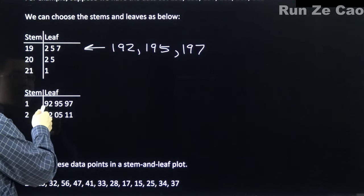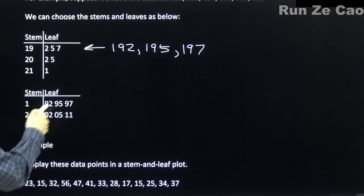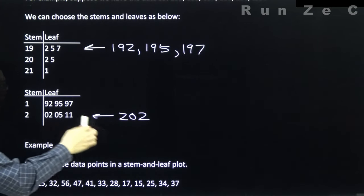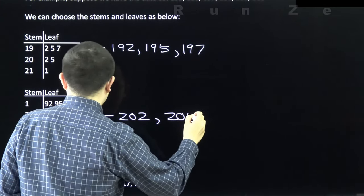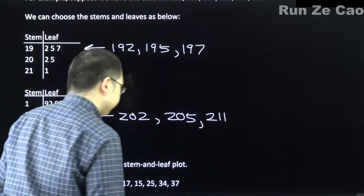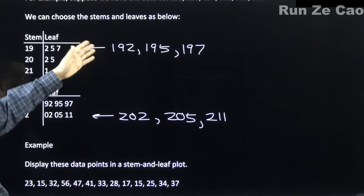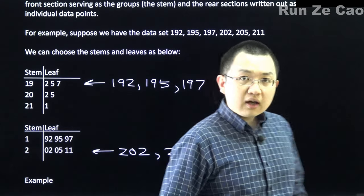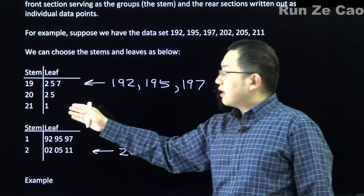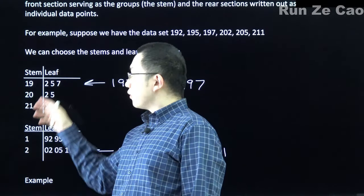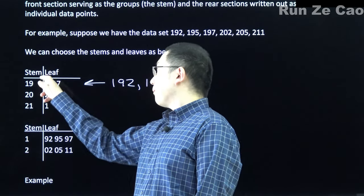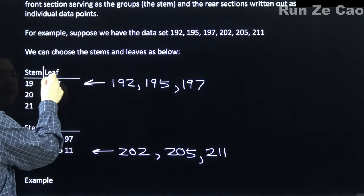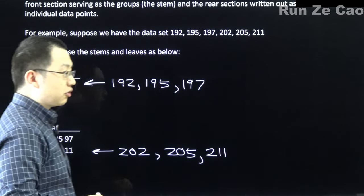With a single-digit stem, you'd have stem 1 with leaves 92, 95, and 97; stem 2 with leaves 02 and 05; and stem 2 with leaf 11. What's the difference between this and just writing all the numbers out in a row? You can easily categorize the ranges of numbers into a few categories, which is really useful if you're making a histogram — you'd know exactly how long each histogram bar is going to be.